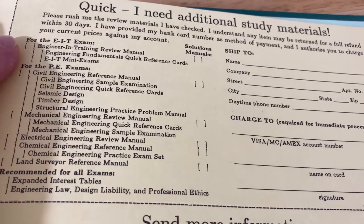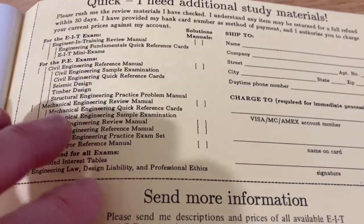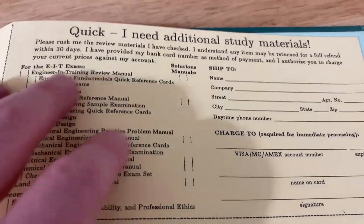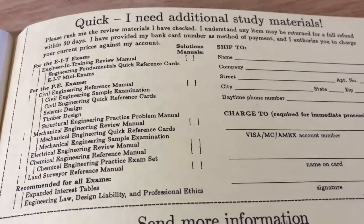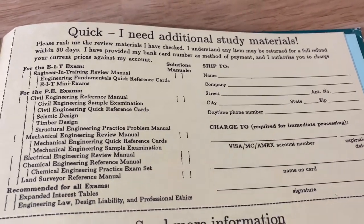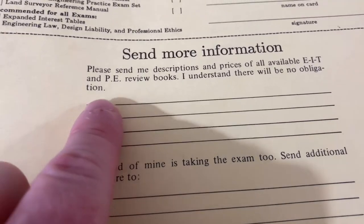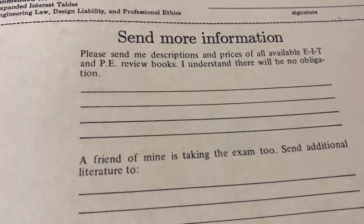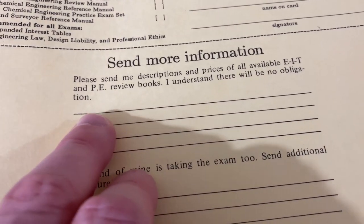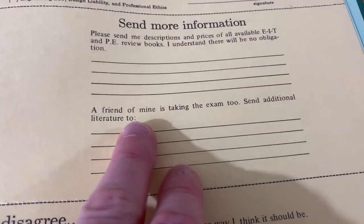So I guess you just mail this in and give them your number and they will charge the current prices, whatever they are, for these books. So it's kind of weird because you don't know how much these things cost. But I guess if you need study materials, maybe this was one of the few places to go back in 1983. This is well before the internet. I guess if you want to know what the prices are, you can also request that. Please send me descriptions and prices of all available EIT and PE review books. I understand there will be no obligation. A friend of mine is taking the exam too. Send additional literature too.